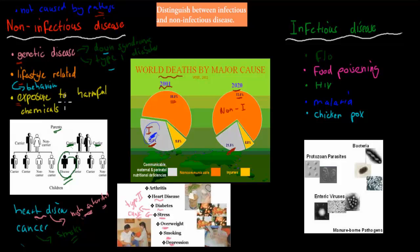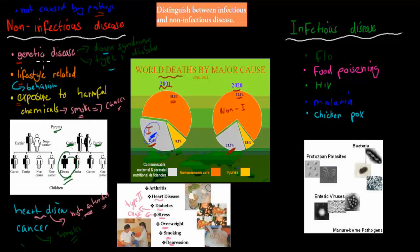The last cause of non-infectious disease is exposure to harmful chemicals — for example, chemicals in cigarettes. That's why smoking is both lifestyle and exposure to harmful chemicals, since cigarettes contain nicotine and many different chemicals that damage your cells and DNA, causing cancer. Other examples include radiation. These are the three factors that cause non-infectious disease: genetic (e.g., Down syndrome, type 1 diabetes), lifestyle (e.g., heart disease, cancer), and exposure to harmful chemicals (e.g., smoking causing cancer).